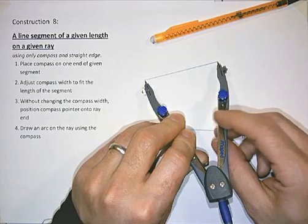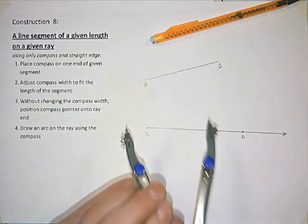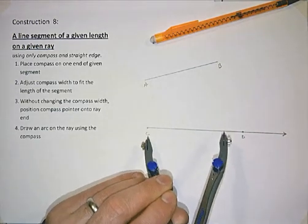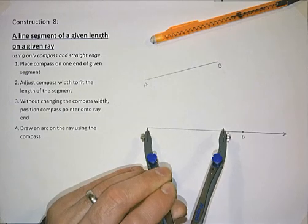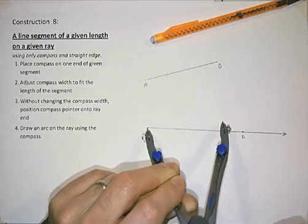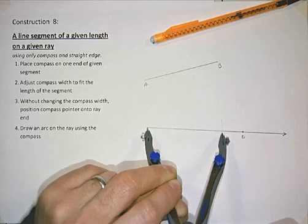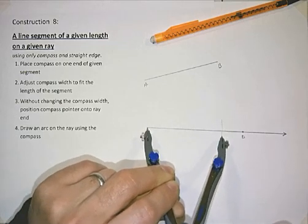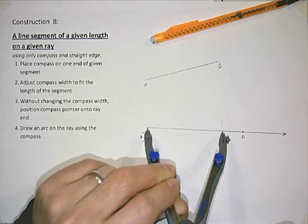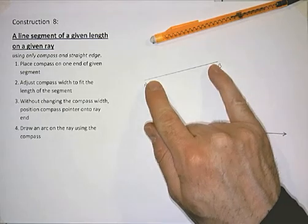So you've set the width of the compass. Without changing that width, you then put the pointer at the end of the ray and create an arc on that ray, which is made at an equal distance to the given length.